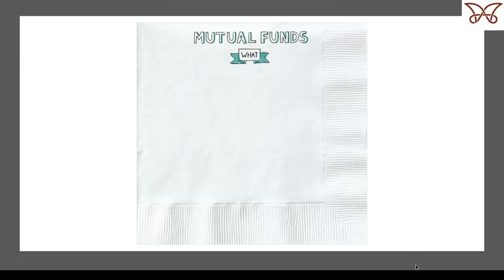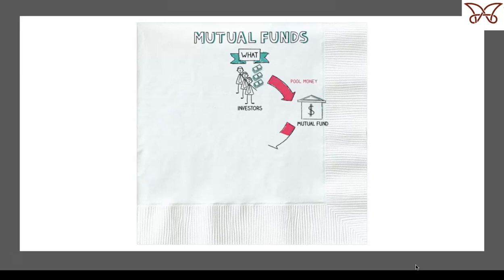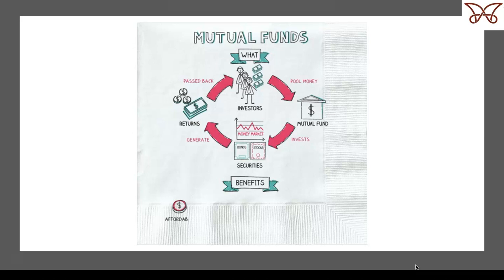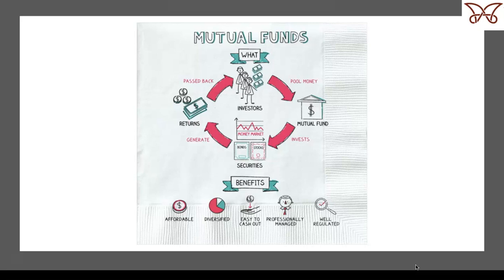Mutual funds are pooled investment vehicles. A group of investors pool their money by investing in a mutual fund. The mutual fund buys a basket of investments, potentially including bonds, stocks, or money market securities. The mutual fund generates returns, which are either passed back to the investors in the form of distributions or reinvested in the fund. Mutual funds come with a range of benefits: they are generally affordable with low or moderate fees, often well diversified, easy to cash out of, professionally managed with portfolio managers and a team of analysts and researchers, and well-regulated with required disclosures to investors.